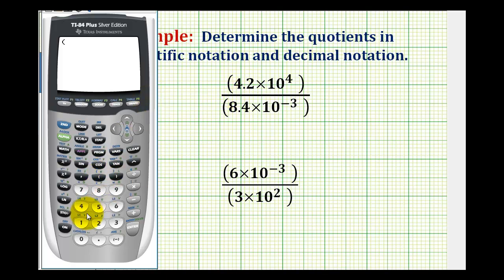So for our numerator we have 4.2 times 10 to the fourth. So we'll type in 4.2. And then we want this key here that has two capital E's in blue. So we'll press second comma. And now we just type in the exponent on 10. So we'll type in 4. So this is how we represent 4.2 times 10 to the fourth on this graphing calculator.